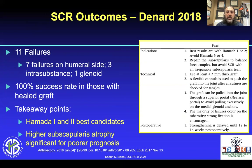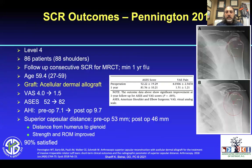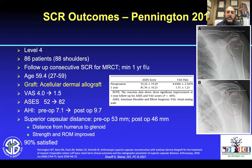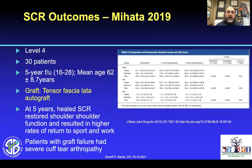Pennington's group used acellular dermal allograft with VAS and ASES scores improving. AHI increased as expected, and superior capsule distance was good. 90% of patients were satisfied. An important takeaway: Pennington emphasized pulling down on the arm during fixation. Using some type of arm holder, abduct the arm, pull it down, with slight internal rotation — so the head is depressed by the time you're fixating the lateral side of the graft.